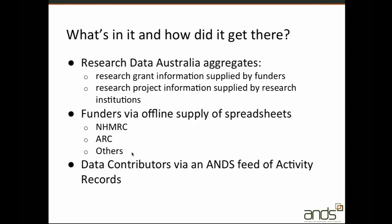Records may have been manually entered or harvested from contributor feeds, along with the way we harvest other objects like collections, parties and services. There's a good reason to have both grants and project descriptions for the same study, as the information provided by the institution can be more current and may contain more information than the grant description. Also there may be many research projects which are either internally funded or funded by bodies who don't supply grant information to ANS, so that's why we collect grant descriptions from funders and project descriptions from institutions.